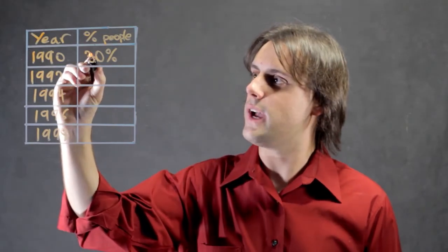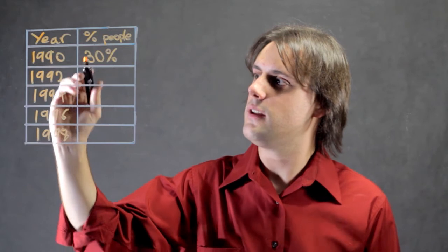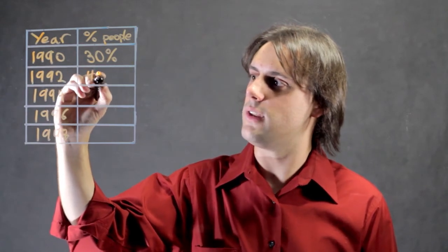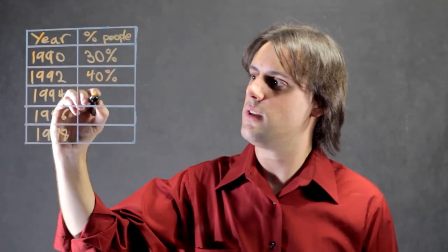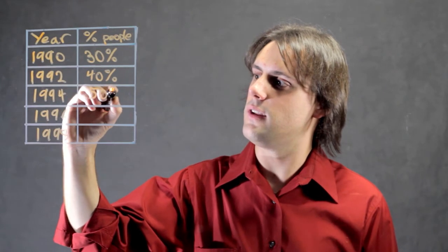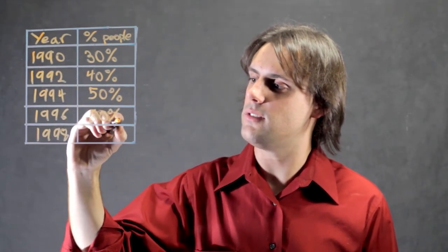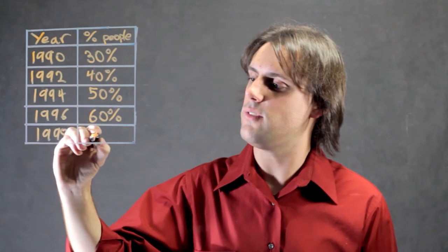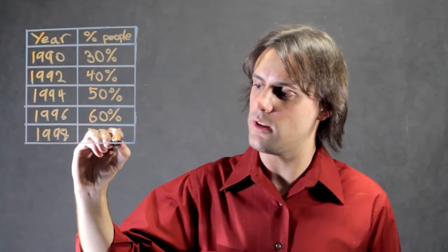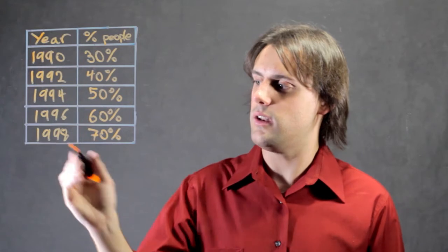If we have 30% of people in 1990, then we would have 40% in 1992, 50% in 1994, 60% in 1996, and finally 70% of people preferring chocolate over vanilla ice cream in 1998.